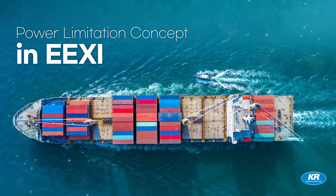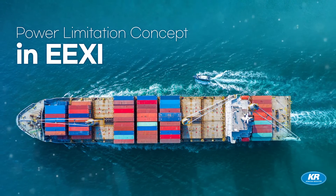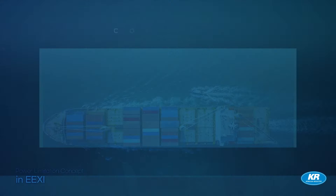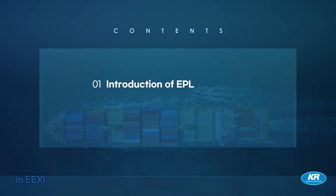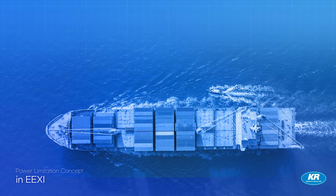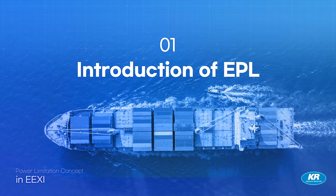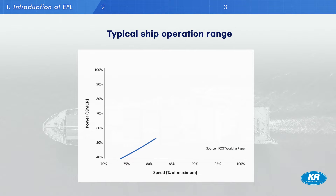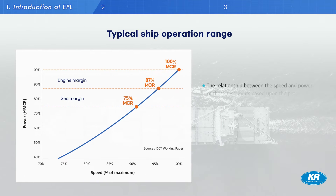In this presentation on the Power Limitation Concept in EEXI, we will cover three parts: an overall introduction of EPL, its methods of power limitation system, and the procedure for document approval and verification of EPL. Most ships operate below 75% of their maximum continuous rating, including engine and sea margins.